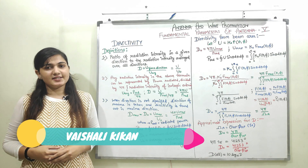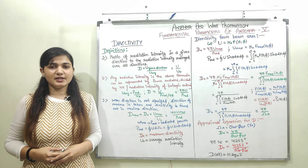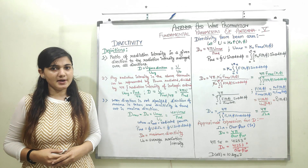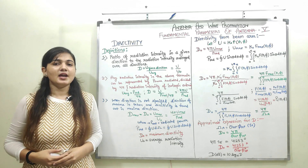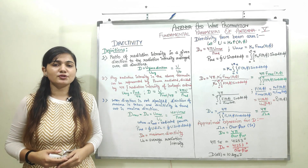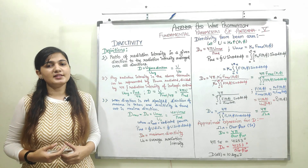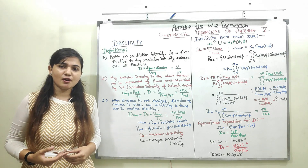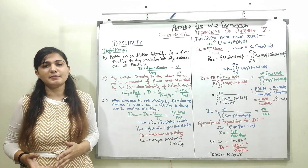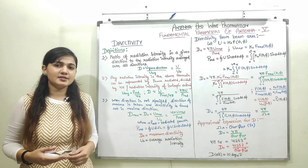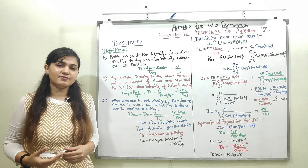Welcome to this video lecture series on Antenna and Wave Propagation. In this video, we will discuss the next fundamental parameter of the antenna, that is directivity. Directivity is one of the most important fundamental parameters of the antenna and we will see various definitions of directivity. Then we will find out the relation of directivity with the beam area. We have discussed beam area and radiation intensity in our previous videos.